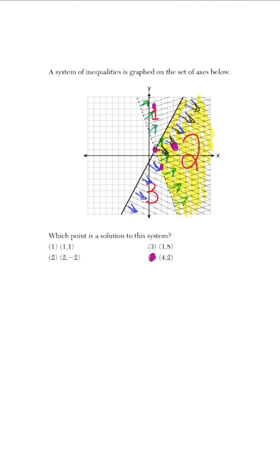Please understand what the solution is and how it changes when the line is solid versus when it's dashed.